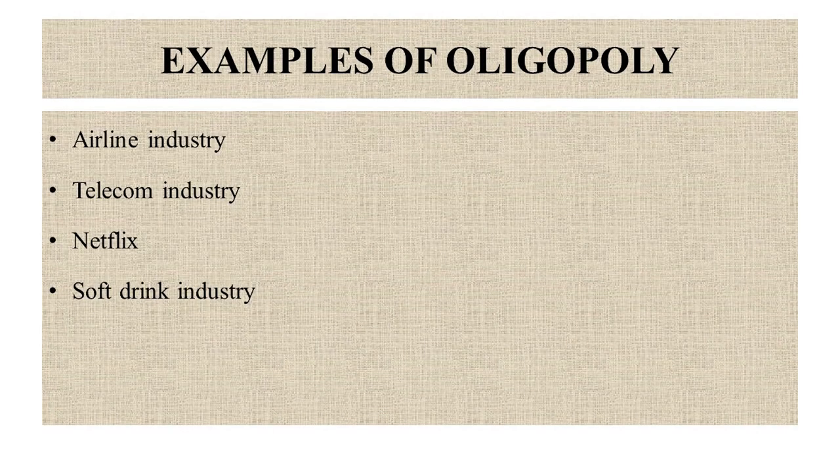In the soft drink industry, the market is dominated by a few major players like Coca-Cola and Pepsi. These companies control a significant market share and invest heavily in advertising, distribution networks, and brand loyalty. Oligopolistic behavior is observed in pricing strategies, new product launches, and market expansion efforts. Competitors closely monitor each other's actions and may respond with similar product offerings or promotional campaigns. Across all these industries, the presence of a small number of dominating firms, high barriers to entry, and interdependence among competitors are key characteristics of oligopoly.